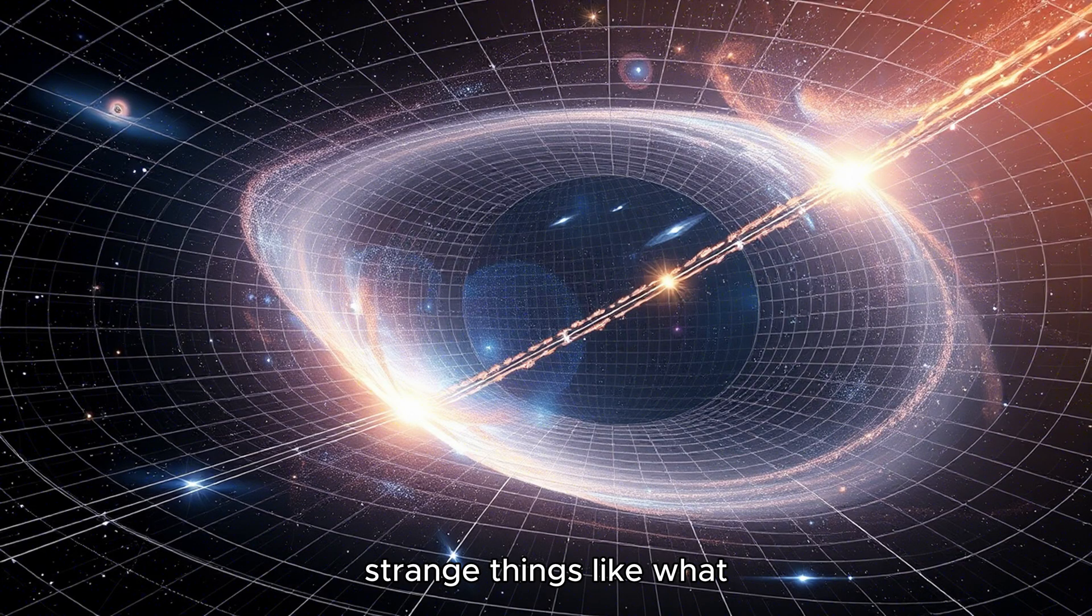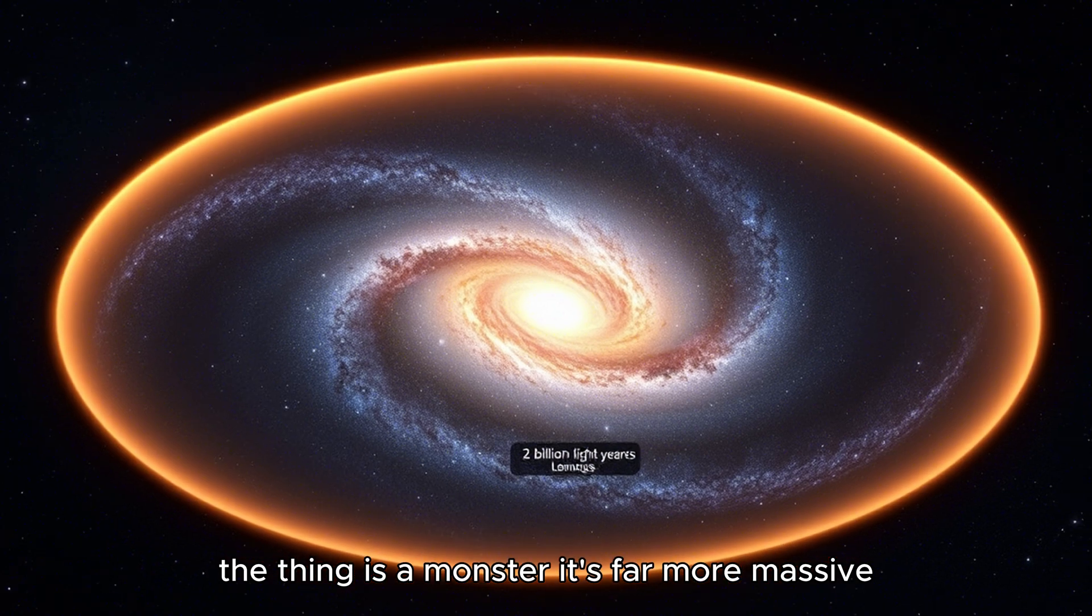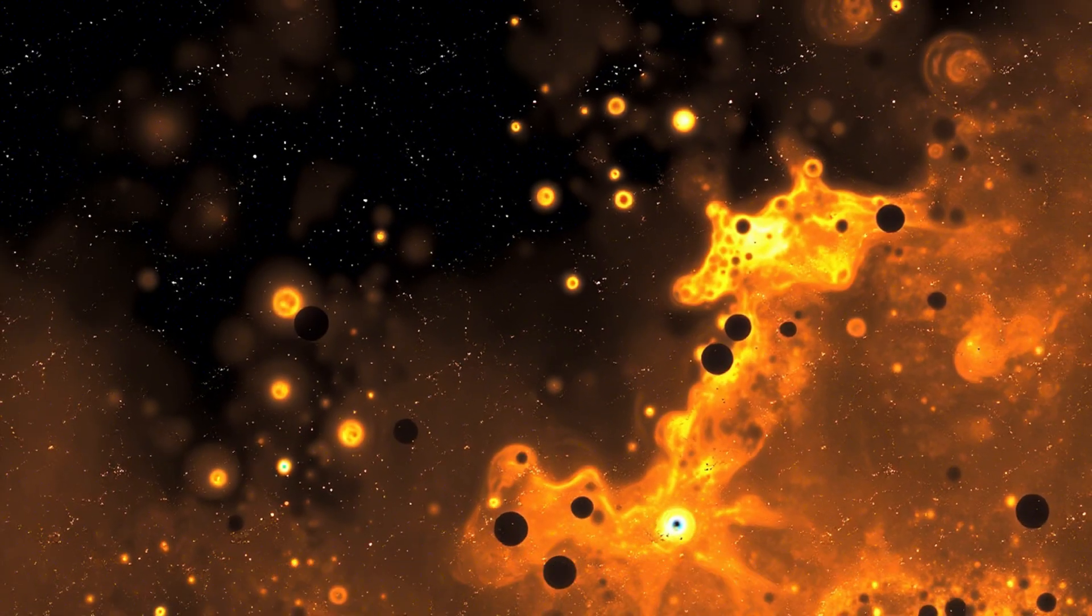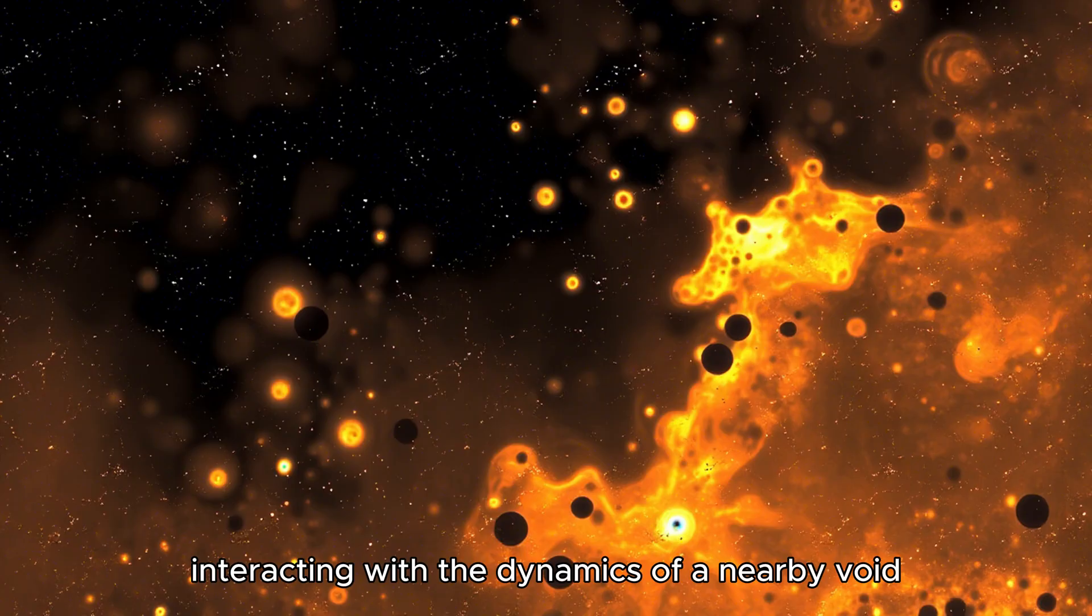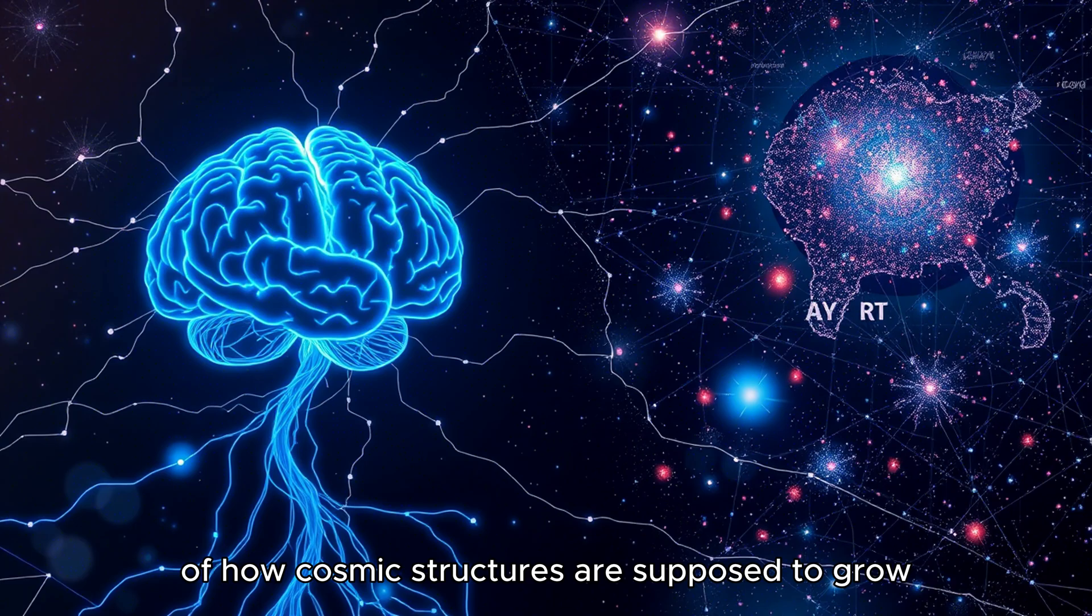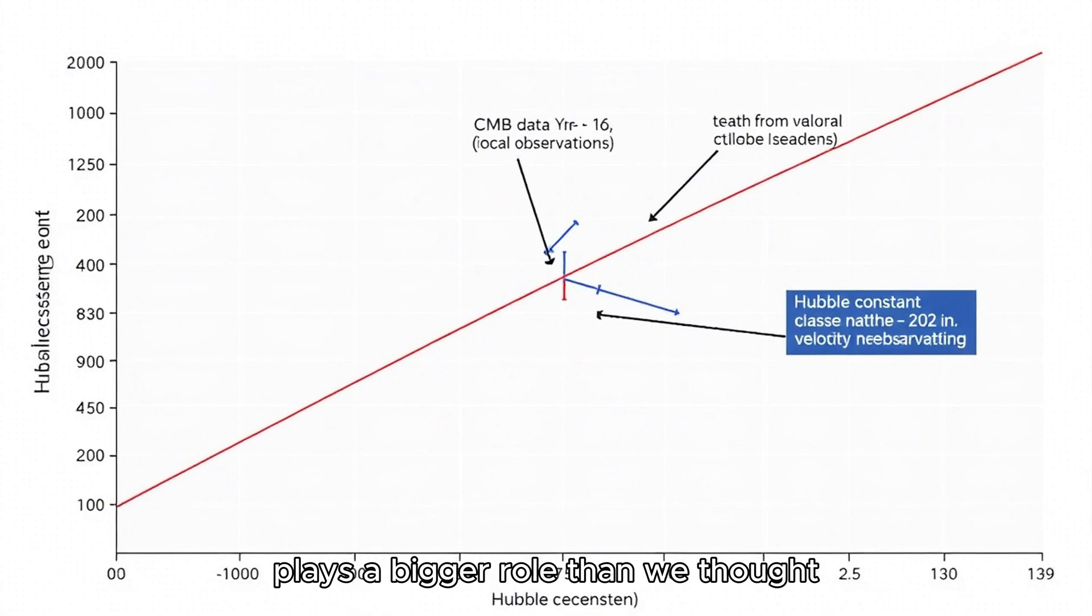Strange things? Like what? Take the El Goro galaxy cluster. The thing is a monster. It's far more massive, and seems much more developed than it should be, according to standard models, given how old the universe was when it formed. Finding such an extreme structure, potentially interacting with the dynamics of a nearby void, really puts pressure on the standard picture of how cosmic structures are supposed to grow. It makes you question if the environment, like a void, plays a bigger role than we thought.